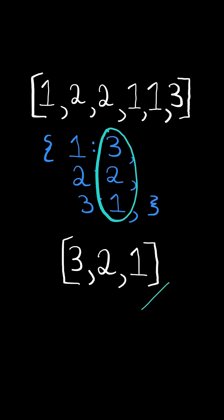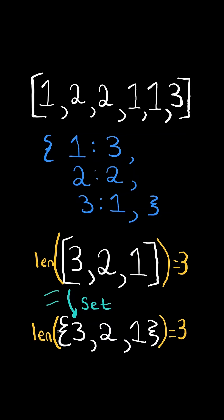We then extract the values of the map as a list. We create a set from the list which would remove duplicates. We take the length from the list and the set. If the lengths are equal, then we return true.